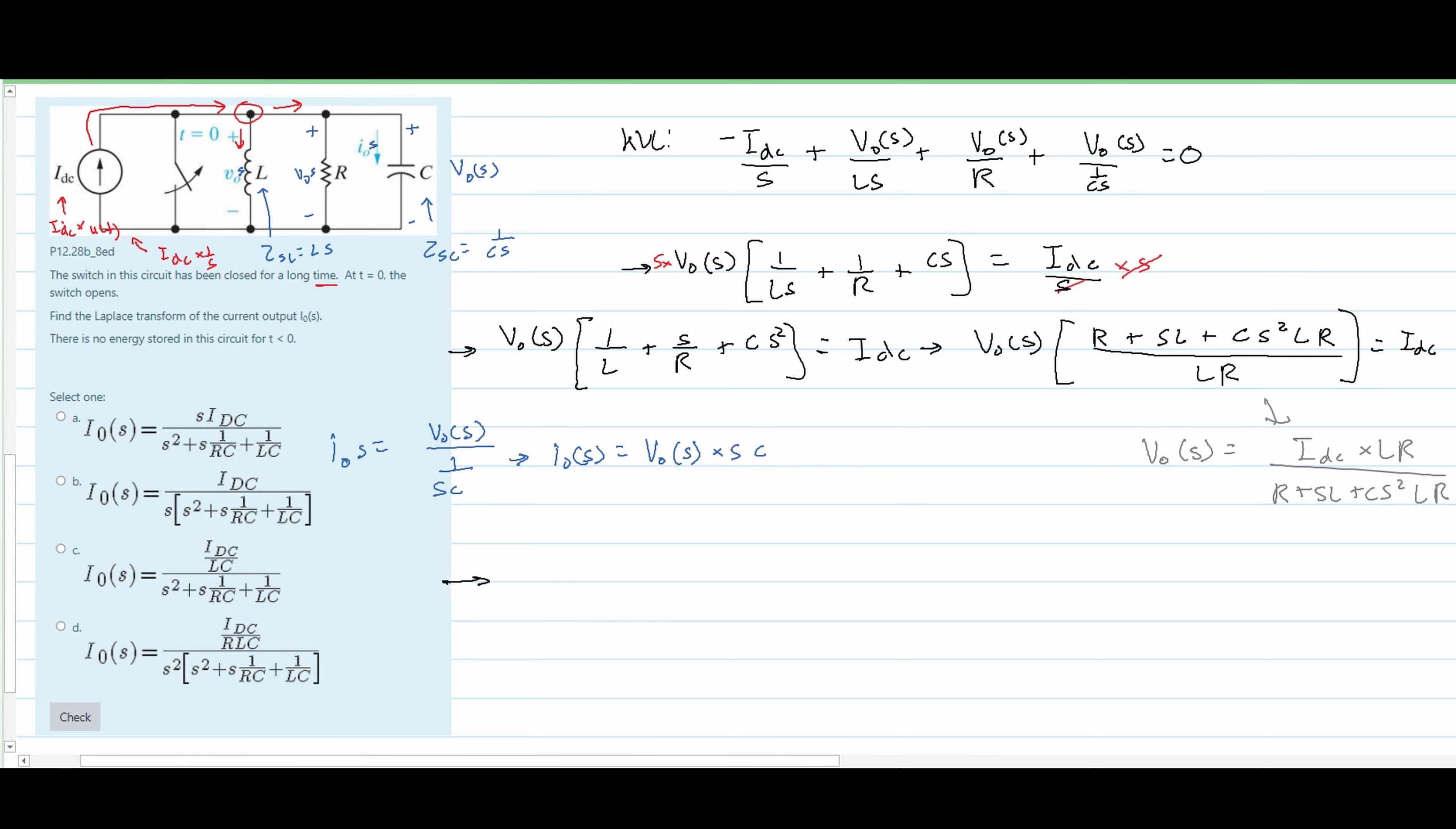So this is the equation that we are going to plug in. We're going to plug it into the blue part. So gray is going to go into blue. We're going to get our I0(s) is equal to, plugging this in, we're going to have IDC, we're going to have sC, and then we're going to have LR, and this will be divided by R plus sL plus c s squared LR. So this is our current equation.